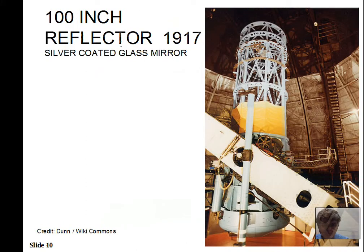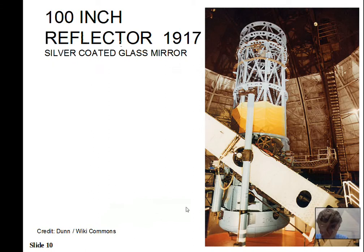Telescope design kept improving. In 1917, a main mirror 100 inches in diameter could be built and coated with silver. The process of making mirrors improved greatly around 1900, and large mirrors to gather light — to see dim objects — came into more use.